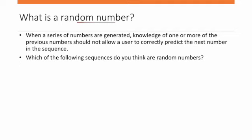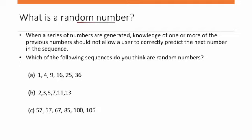Which of the following sequences do you think are random numbers? Sequence (a): 1, 4, 9, 16, 25, 36. If we examine this pattern, we can see these are squares: 1², 2², 3², 4². If we know this pattern, we can predict the next numbers will be 49, 64, 81. This is not a random number.